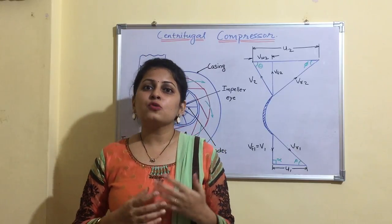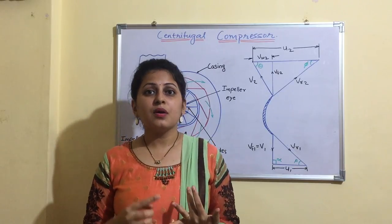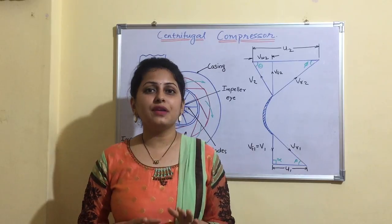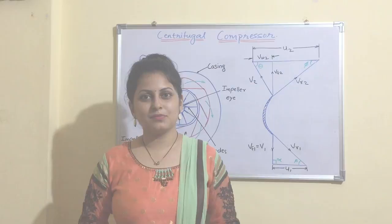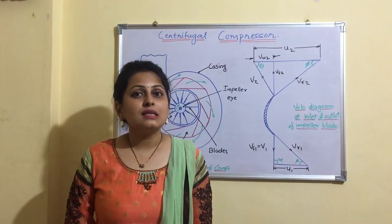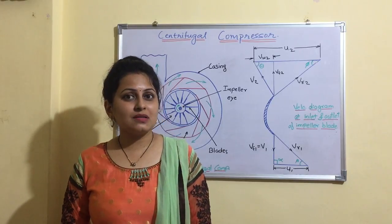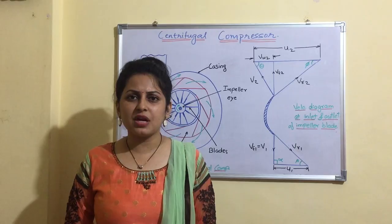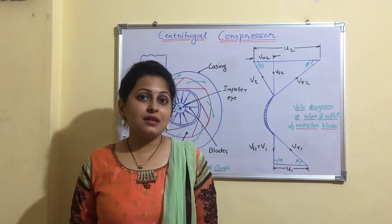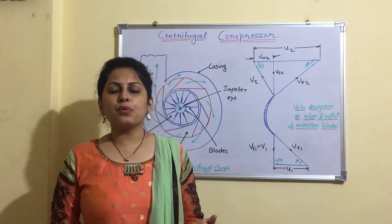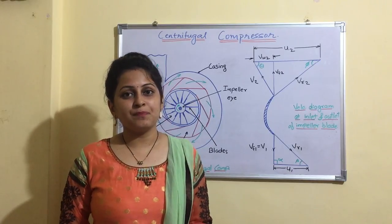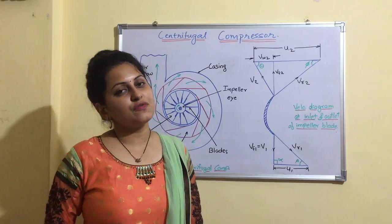Types of rotary compressors include root blower, vane type, screw type, and axial type. In this video we are going to study the centrifugal type compressor. Centrifugal compressors meet high demand of compressed air and are used in oil refineries, gas turbines, automobile turbochargers and superchargers, refrigeration, air conditioning, HVAC, and various manufacturing processes. As they provide oil-free compressed air, they are also used in the food and beverage industry.